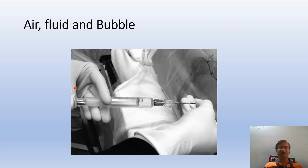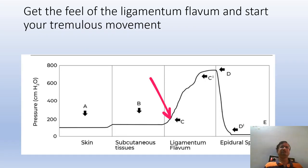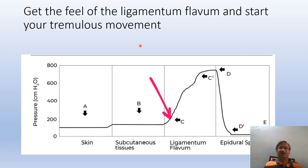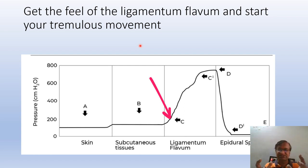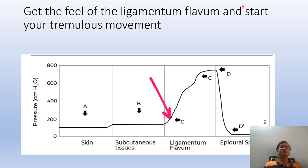Get the feel of the ligamentum flavum and start your tremulous movements there — do not start from the skin. And do not inject local anesthetic into the ligamentum flavum, as it has no nerves. If you inject a lot of local anesthetic into the ligamentum flavum, the stiffness is lost and your tremulous movement for loss of resistance may become unreliable. So start your tremulous movement at the ligamentum flavum.